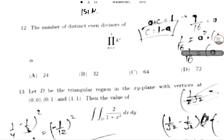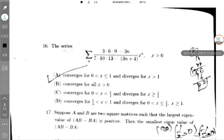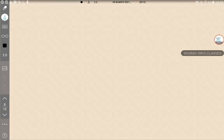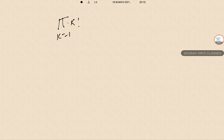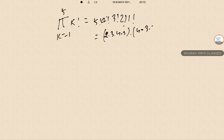This is ISI M.Math 2021 solution, question number 12. The product from k=1 to 5 of k factorial is given. We need to find the number of distinct even integers. Expanding: the product is 5! · 4! · 3! · 2! · 1!, removing the 1s gives us 2 · 3 · 4 · 5 · 2 · 3 · 4 · 2 · 3 · 2 = 2^8 · 3^3 · 5.